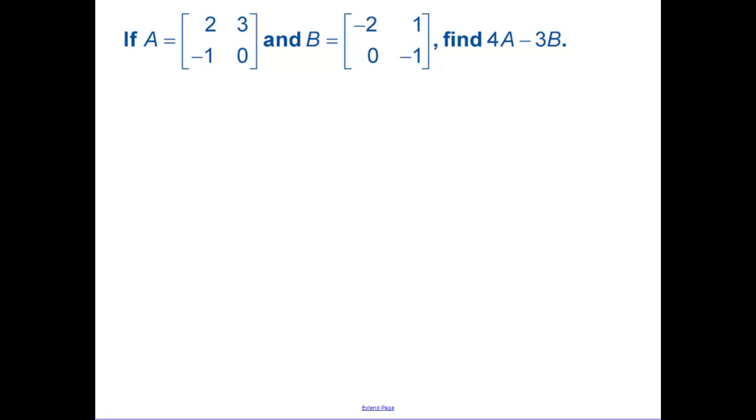Our next example. We need to find 4A minus 3B. So first I would recommend us finding 4A. If I find 4A, 4 times 2 is 8, 4 times 3 is 12, 4 times negative 1 is negative 4, 4 times 0 is 0.